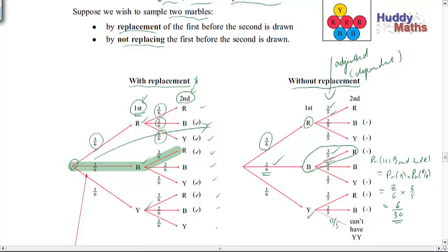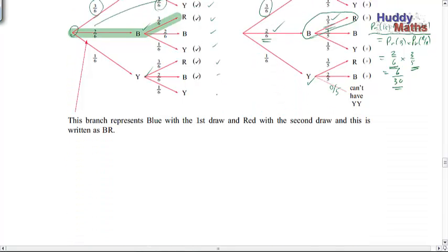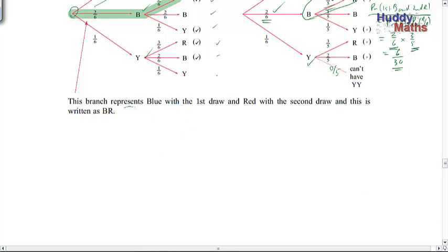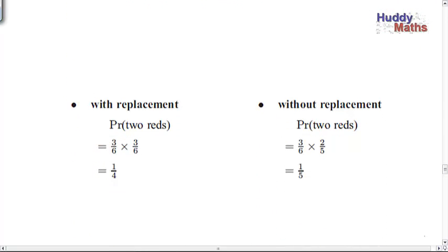The tree helps us analyse the event — it's a compound situation, these two multiplied together. Ultimately, we want to work out these numbers without a tree. For two reds with replacement, probabilities don't change: 3/6 times 3/6 = 9/36 or a quarter. Without replacement, the second probability is adjusted — it's the probability of a red given that a red has occurred. So there's one less red and one less in the total: 2/5. That's the idea.